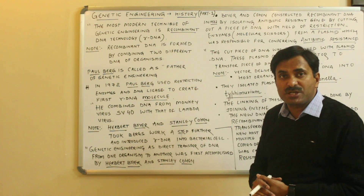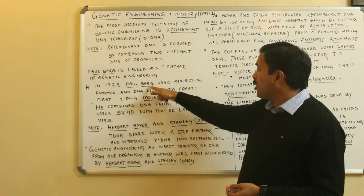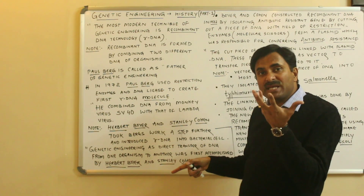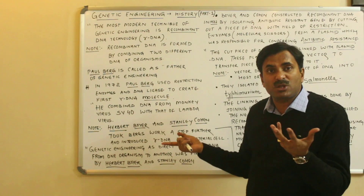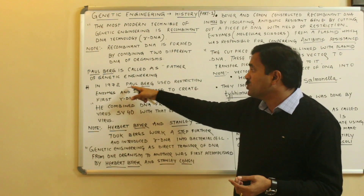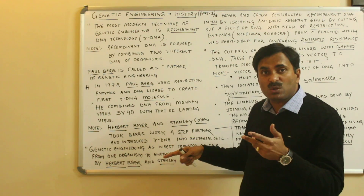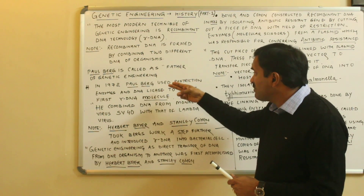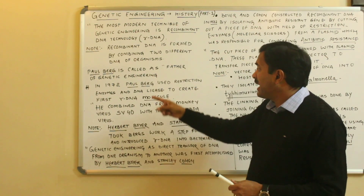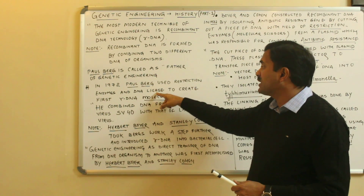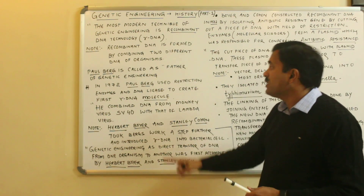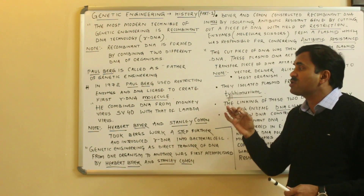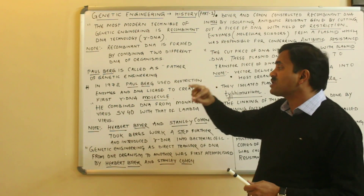Why is Paul Berg called the father of genetic engineering? In the year 1972, Paul Berg used restriction enzymes — which are the molecular scissors used in genetic engineering — to cut DNA, and then joined two DNAs together with the help of DNA ligase enzyme, creating the first recombinant DNA molecule.